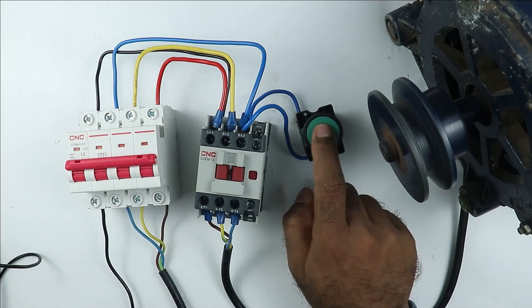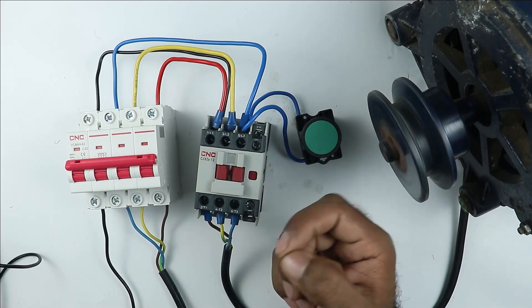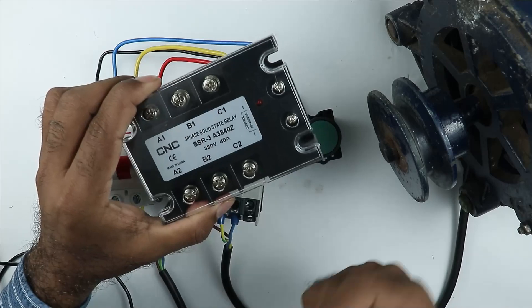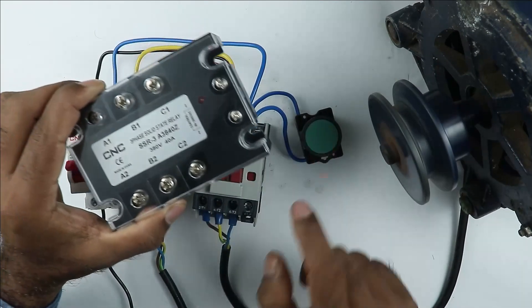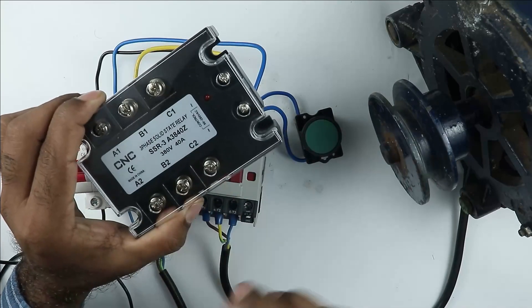Like when I press this the power supply will go to the contactor and it will take time to start maybe some milliseconds. But when you use this type of relay there will be fast switching. This means the moment you turn on this relay it will be turned on instantly. Compared to contactor, relay does fast switching.